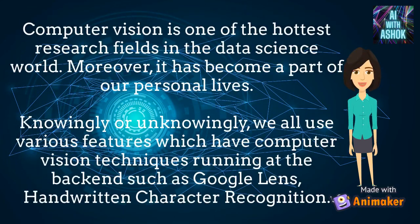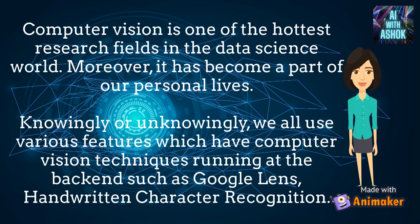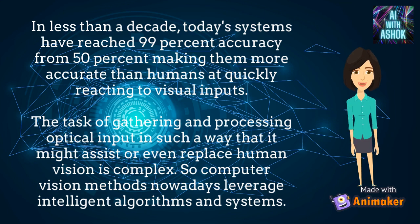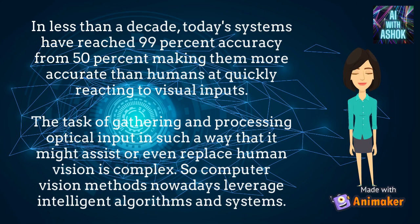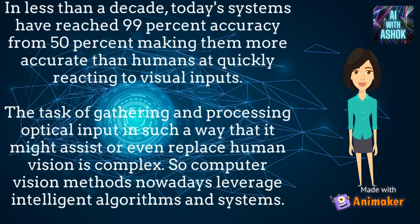Computer vision is one of the hottest research fields in data science, and it has become part of our personal lives. We all use features with computer vision techniques running in the back end, such as Google Lens and handwritten character recognition. In less than a decade, today's systems have reached 99% accuracy from 50%, making them more accurate than humans at quickly reacting to visual inputs. Computer vision methods now leverage intelligent algorithms and systems to gather and process optical input in ways that can assist or even replace human vision.